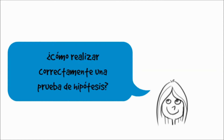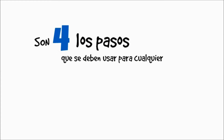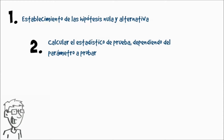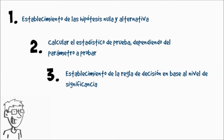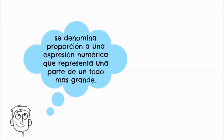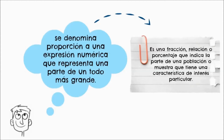¿Cómo realizar correctamente una prueba de hipótesis? Son cuatro los pasos que se deben usar: Paso 1, establecimiento de las hipótesis nula y alternativa. Paso 2, calcular el estadístico de prueba dependiendo del parámetro a probar. Paso 3, establecimiento de la regla de decisión en base al nivel de significancia. Paso 4, interpretación de resultados y conclusión. Recordemos que se denomina proporción a una expresión numérica que representa una parte de un todo más grande; es una fracción, relación o porcentaje que indica la parte de una población o muestra que tiene una característica de interés particular.